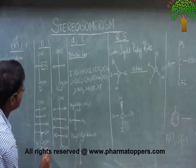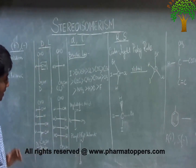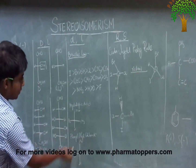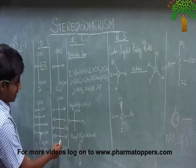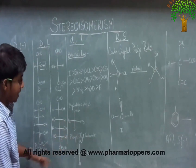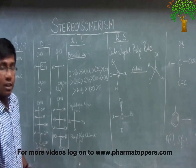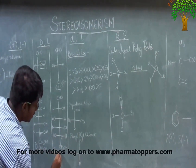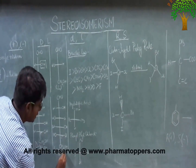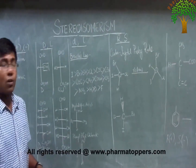Capital D and capital L is just based on glyceraldehyde. Similarly, we have another glucose where the penultimate carbon — carbon number 5 — has the OH on the left. So this is nothing but L-glucose. Remember, I am writing capital D and capital L here.